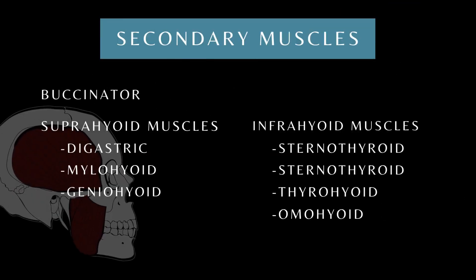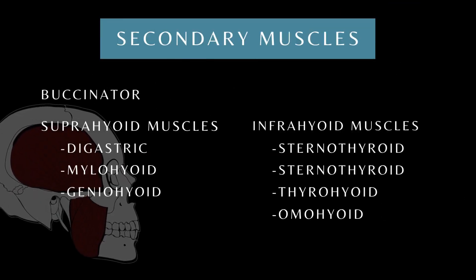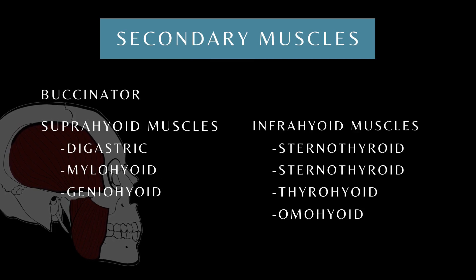There are other muscles of the head and neck that participate in mastication. These are called secondary or accessory muscles. They include the buccinator, suprahyoid muscles — digastric, mylohyoid, and geniohyoid muscles — infrahyoid muscles — the sternohyoid, sternothyroid, thyrohyoid, and omohyoid muscles.